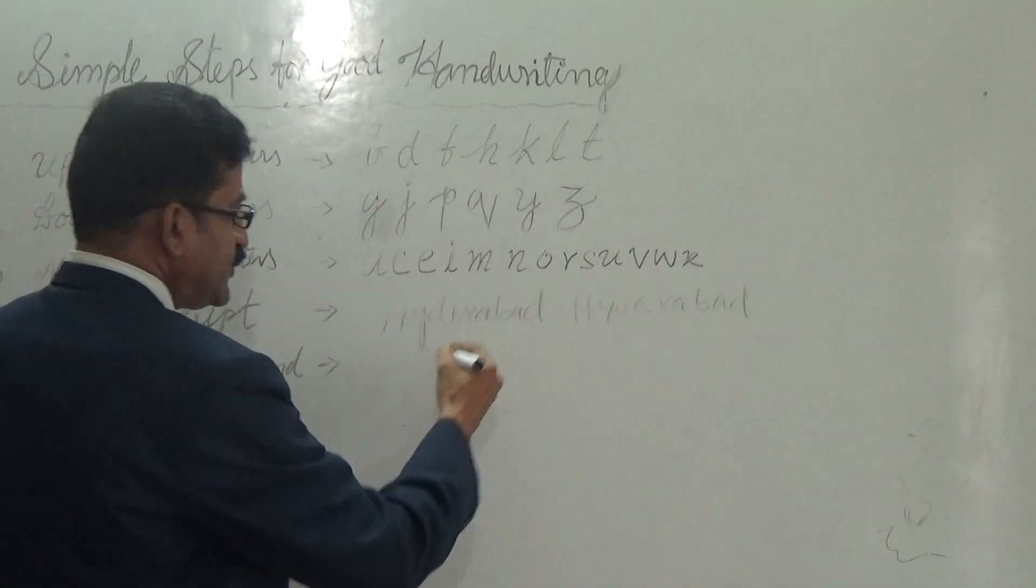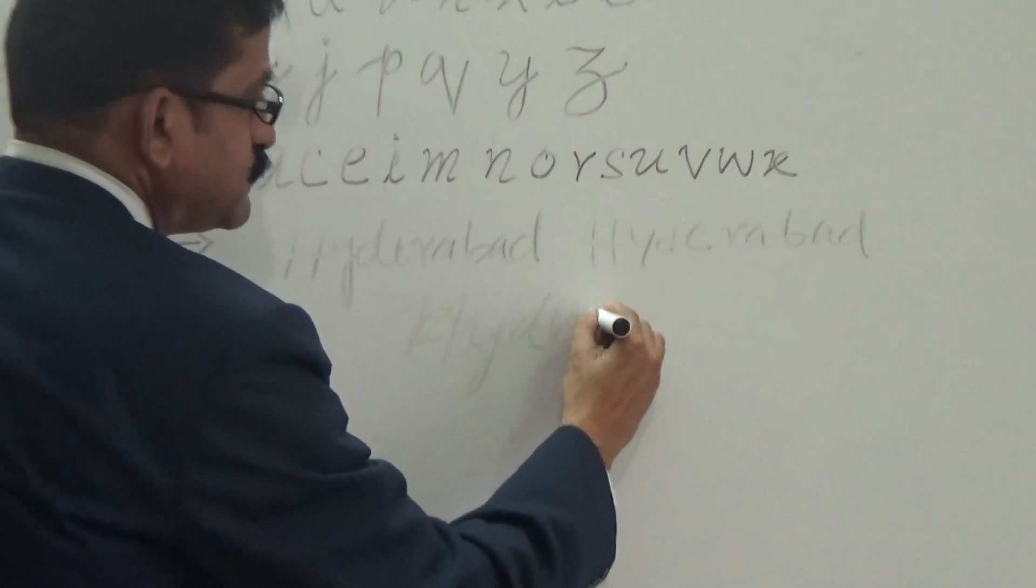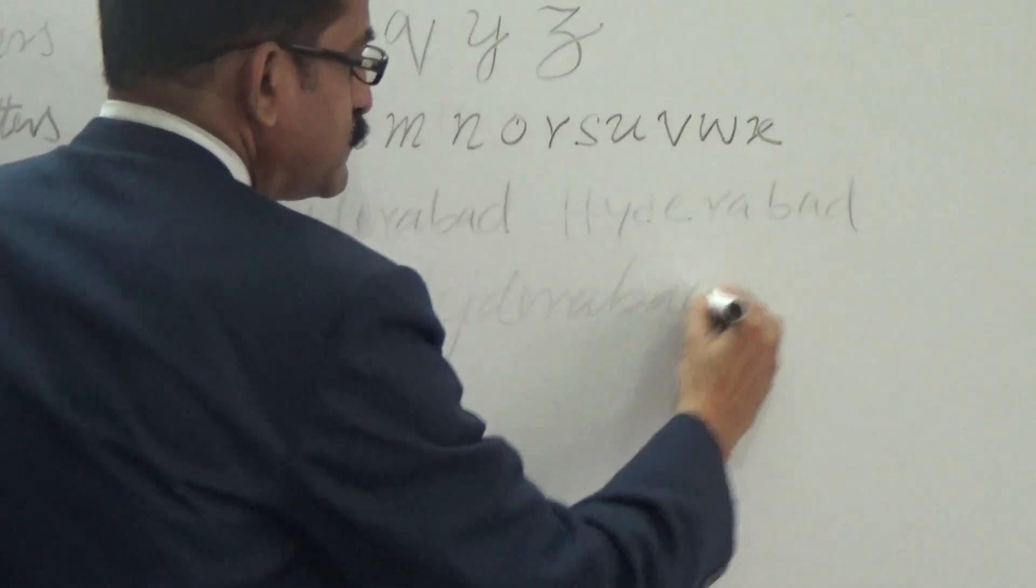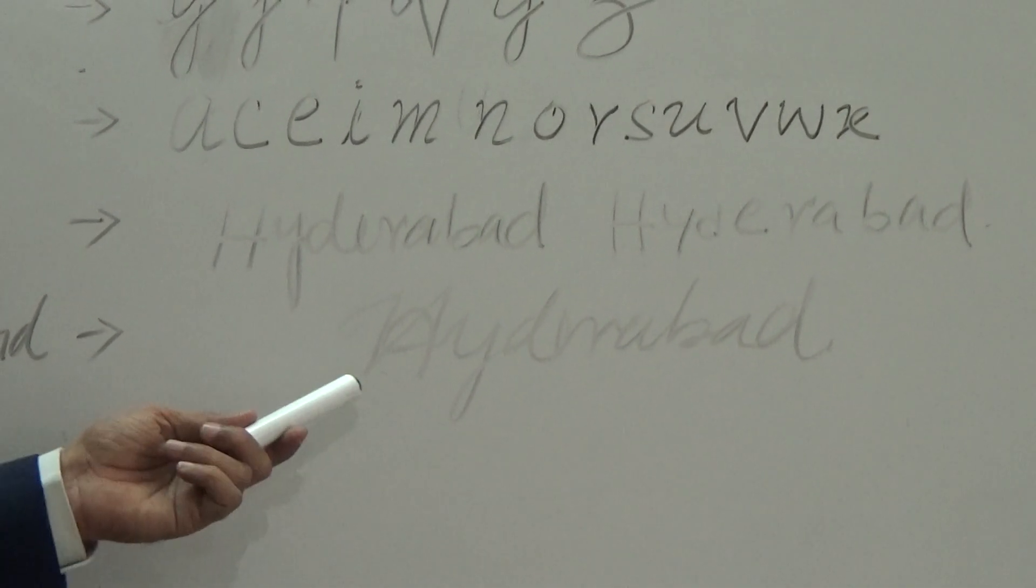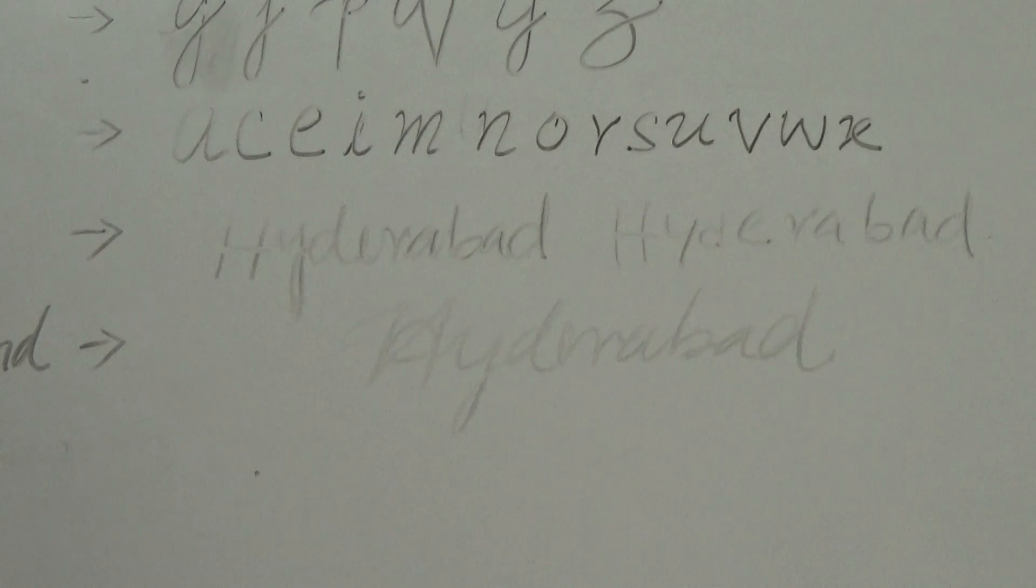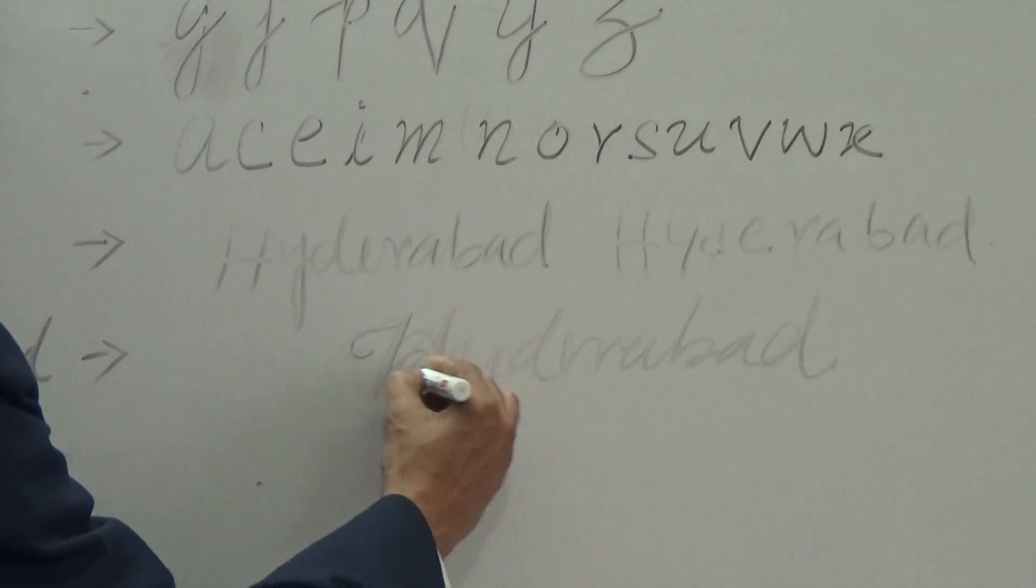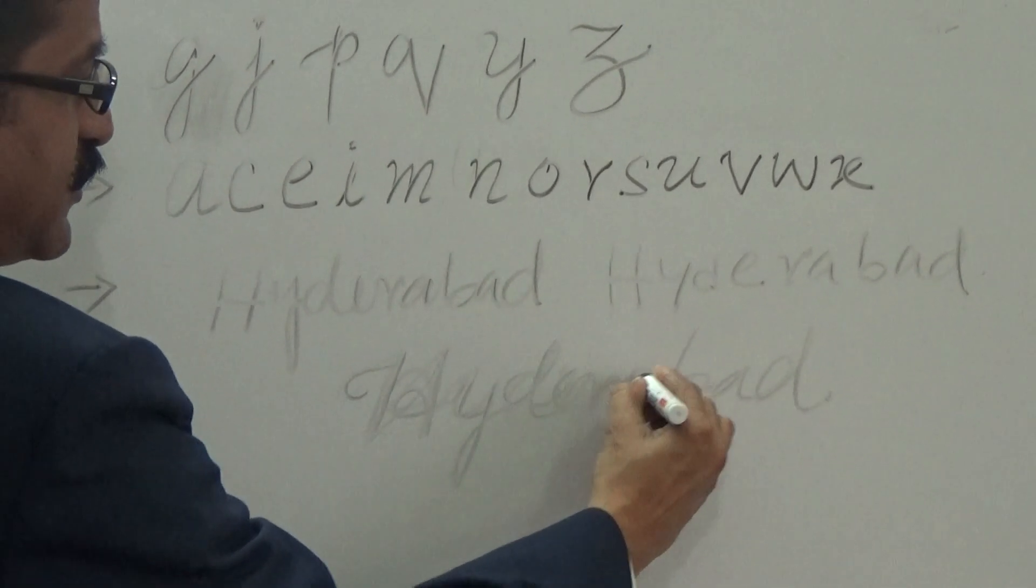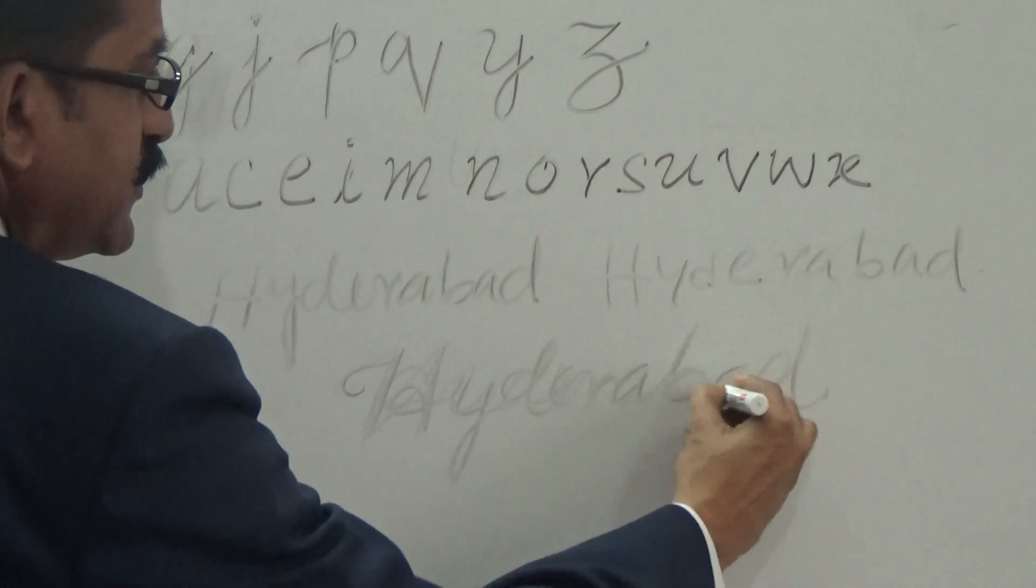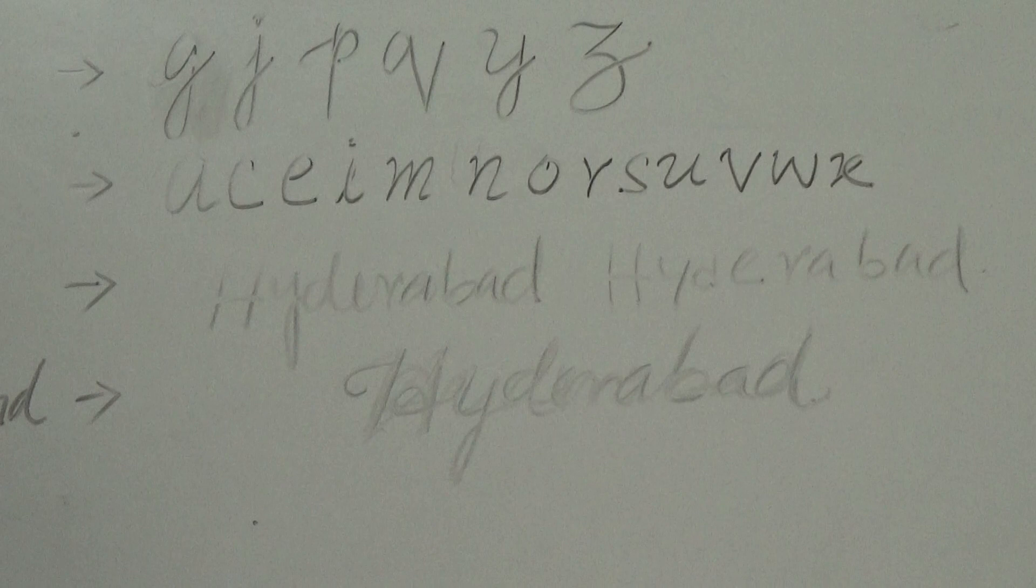For example, if we write like this. Like that. If we look at it, here we followed all these things. For example, this is H, Y, D, E, R, A, P, A, D. Here we followed all the steps.